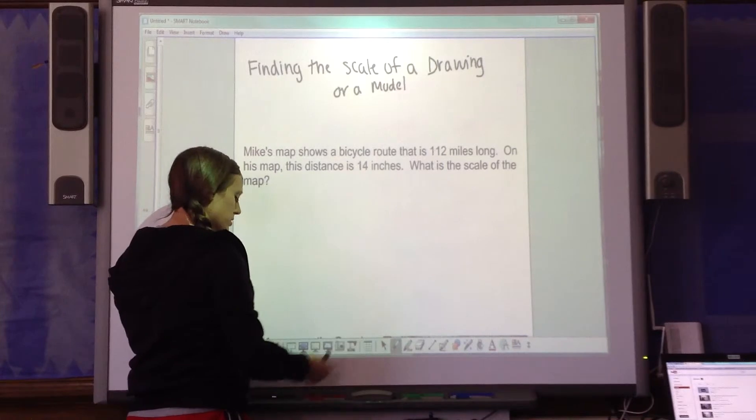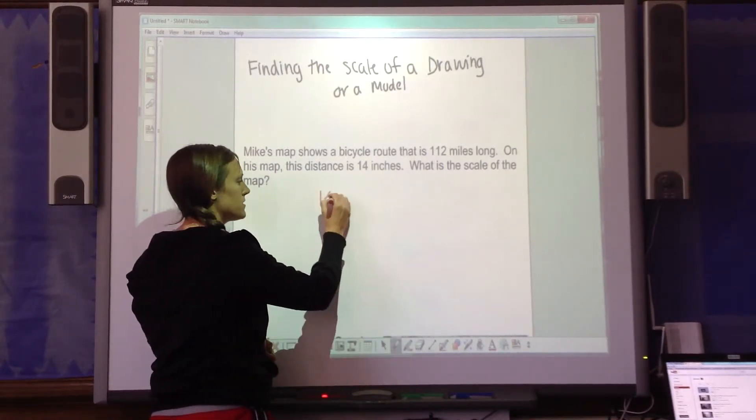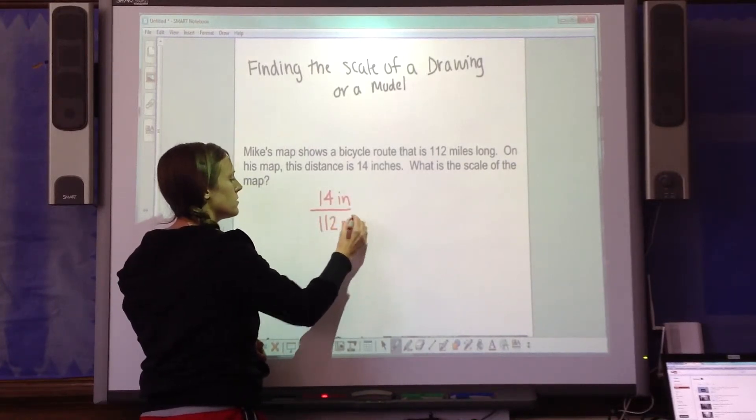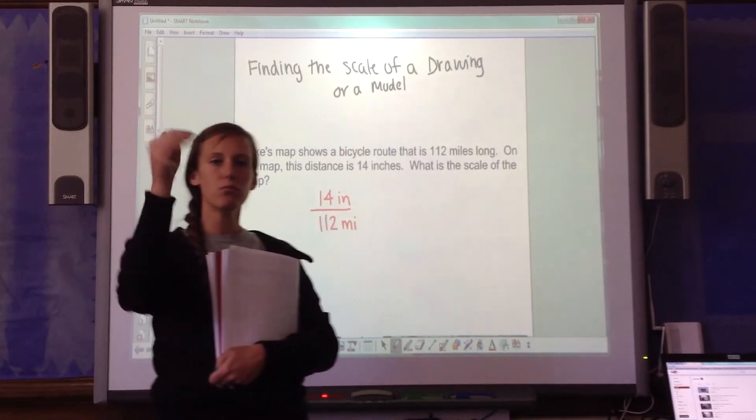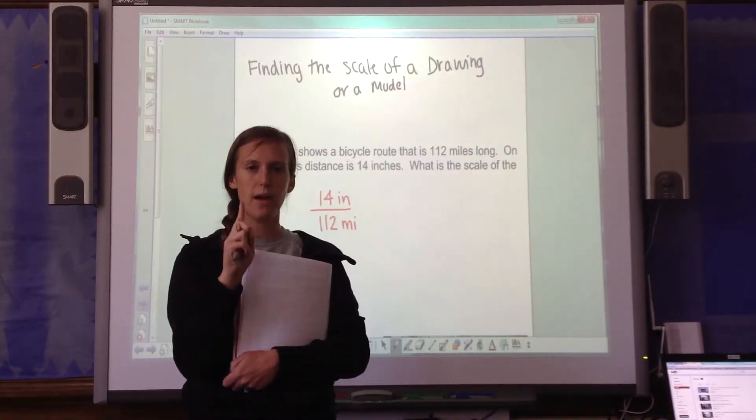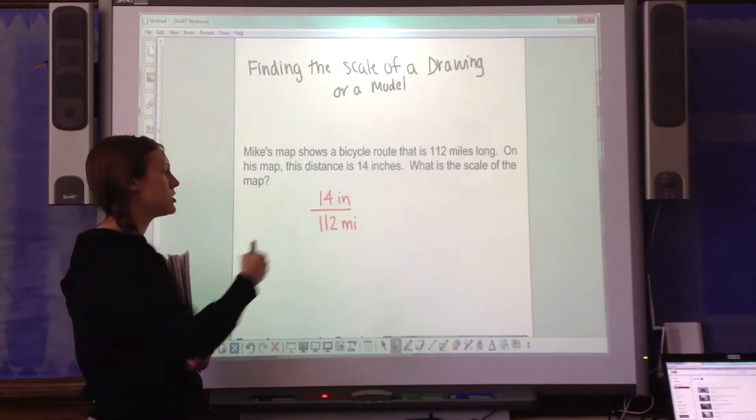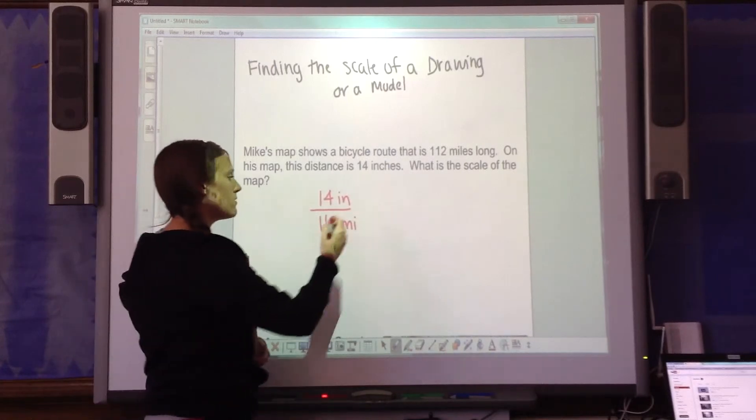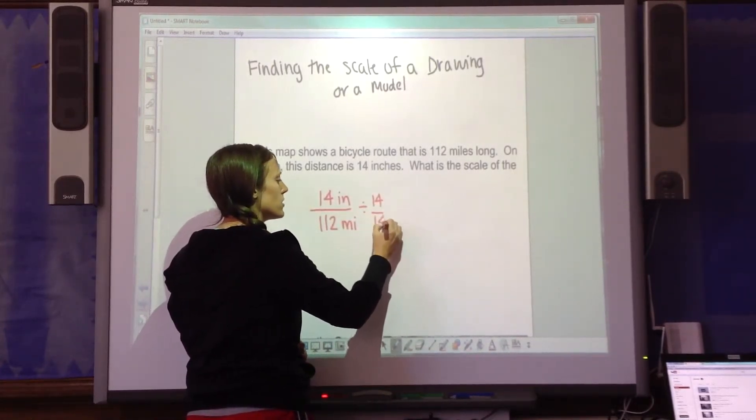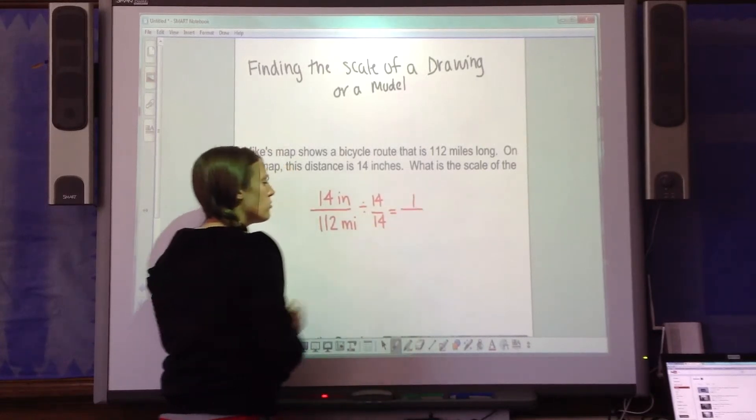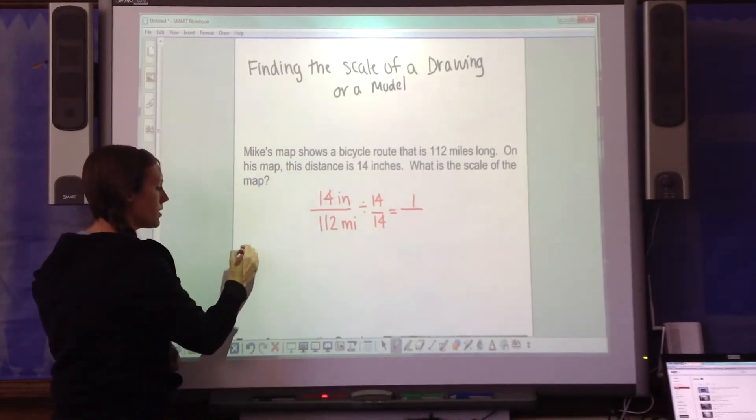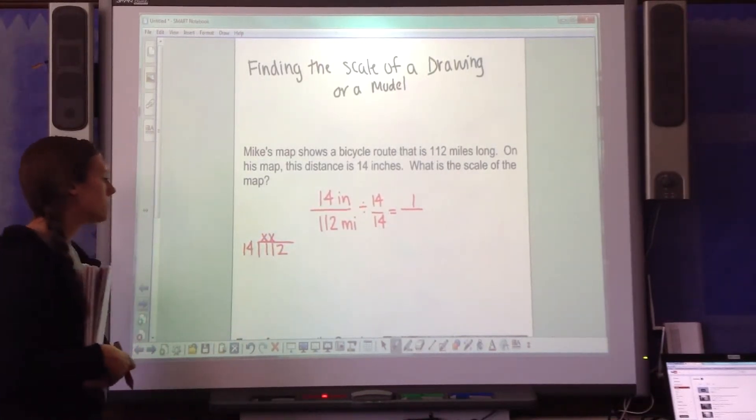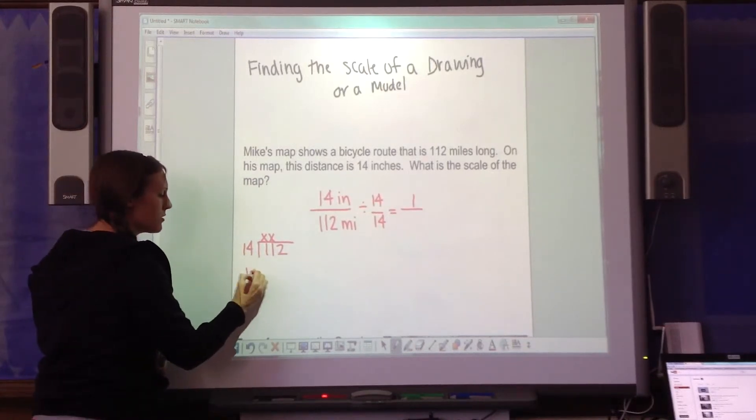So model over the original. On the map, it's 14 inches. That's our model. Our original is 112 miles long. The thing with scales is that the numerator or the first number is always 1. So I'm not finished here. I'm going to have to simplify to make sure that the number here is a 1. So in order to get the numerator to be 1, I'm going to divide both the numerator and the denominator by 14. Well, this is easy. 14 divided by 14 is 1, so I'm going to have to solve that problem for the denominator.